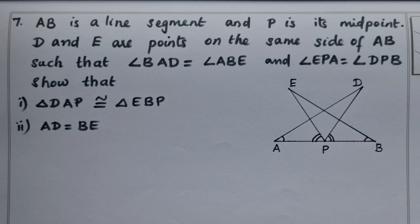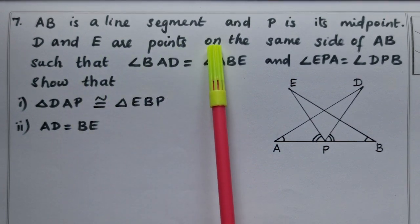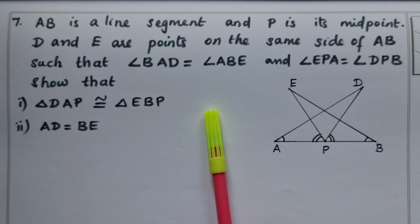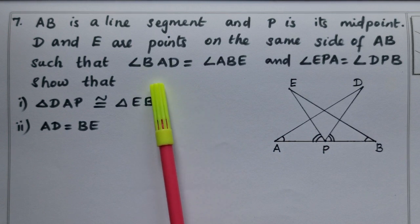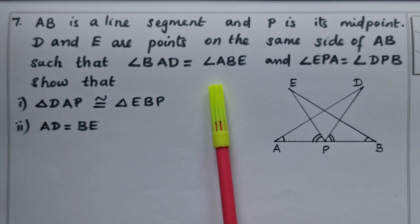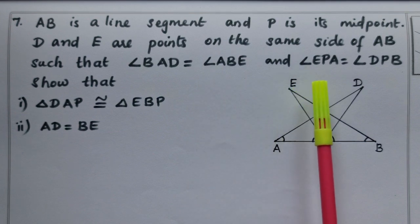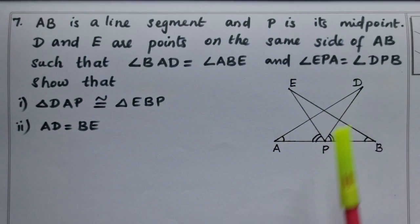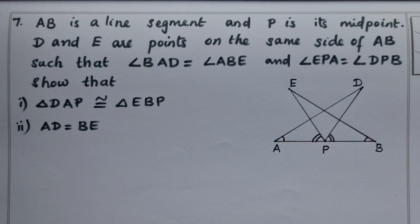Hi students, today we are going to study class 9 exercise 7.1 question number 7. Our question is: AB is a line segment and P is its midpoint. D and E are points on the same side of AB such that angle BAD equals angle ABE and angle EPA equals angle DPB. Show that triangle DAP is congruent to triangle EBP, and second, AD equals BE.